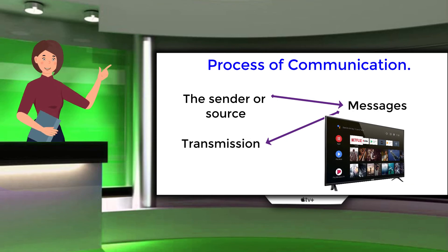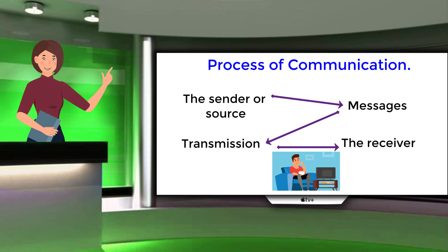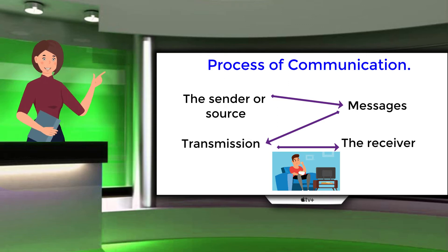The next element is the receiver, also called the destination. It may be an individual, a group, or a crowd reading, listening, or watching the message. The receiver is the object of the communication process. Communication cannot take place without a receiver for whom the message is meant. We receive a message, interpret it, and then derive meaning from it. For successful communication, the receiver should receive the message in the same way it was meant by the sender. In interpersonal communication, the receiver shares a close relationship with the sender, which gradually gets diluted in group or mass communication.